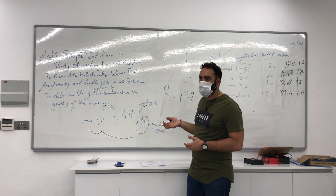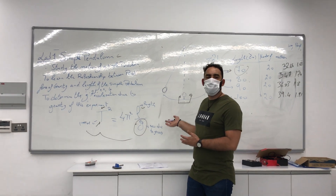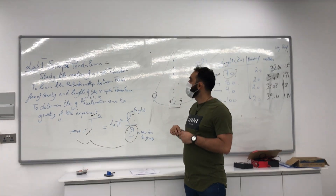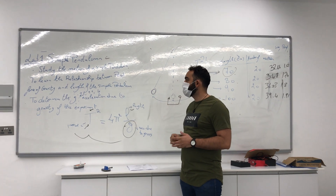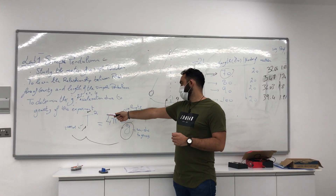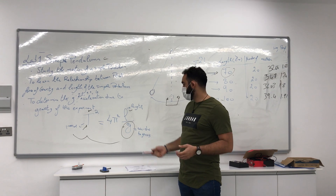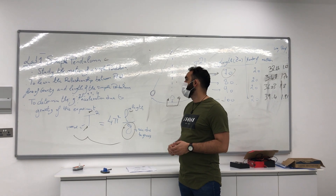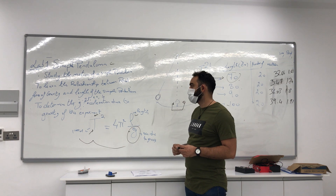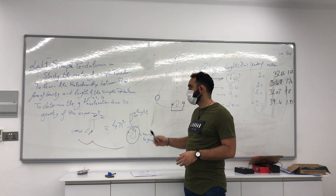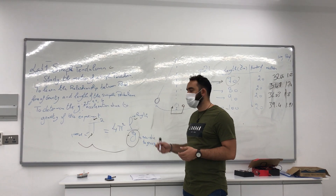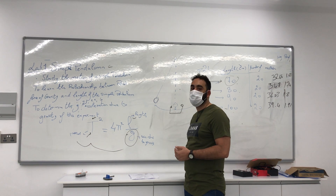The aim of the experiment today is firstly to study the motion of a simple pendulum — the motion is periodic. Secondly, to learn the relationship between the period T, the force of gravity g, and the length of the simple pendulum. And finally, to determine g, the acceleration due to gravity.